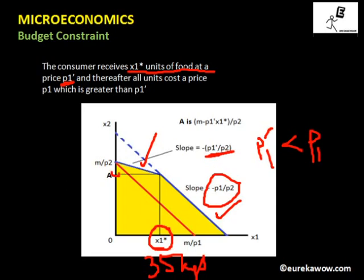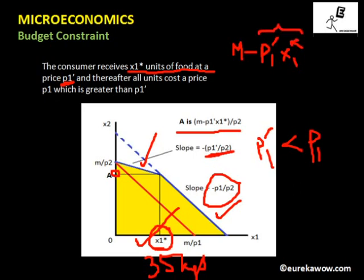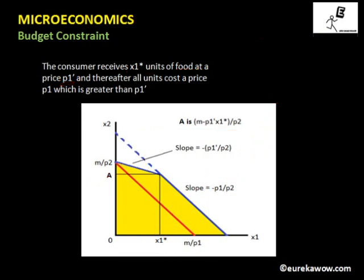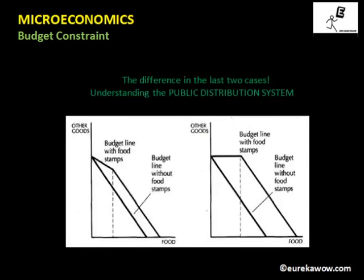Point a1 can be calculated as m minus p1 dash times x1 star, divided by p2. This is because the consumer's income was m, and they spent p1 dash times x1 star on purchasing x1 star units at the subsidized price. The remaining income divided by the price of good two gives the units of good two the consumer can buy.